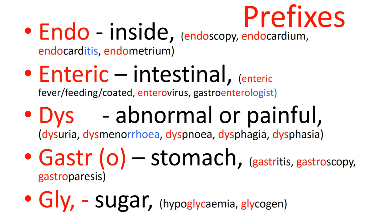'Gastro' refers to the stomach — specifically the anatomical stomach between the esophagus and the duodenum. Gastritis is inflammation of the stomach. Gastroscopy is to look into the stomach, often performed with an endoscopic tube. Gastroparesis: 'paresis' means weakness — in long-term diabetes there can be damage to the nerve supply of the stomach causing weakness, leading to poor food processing and vomiting especially after large meals.